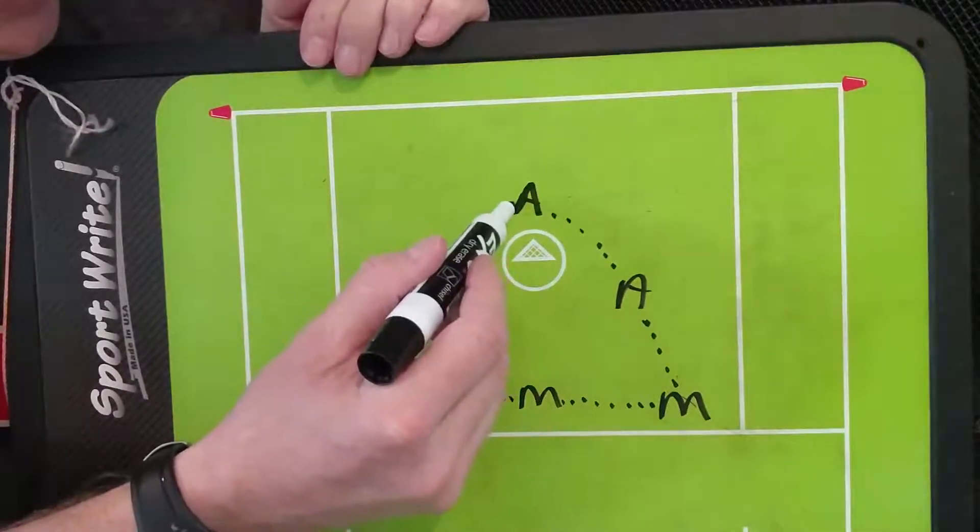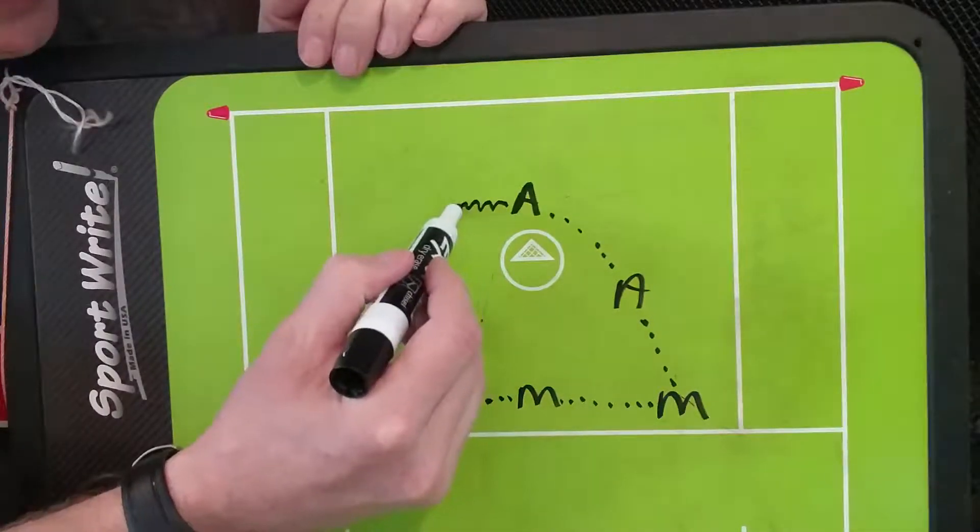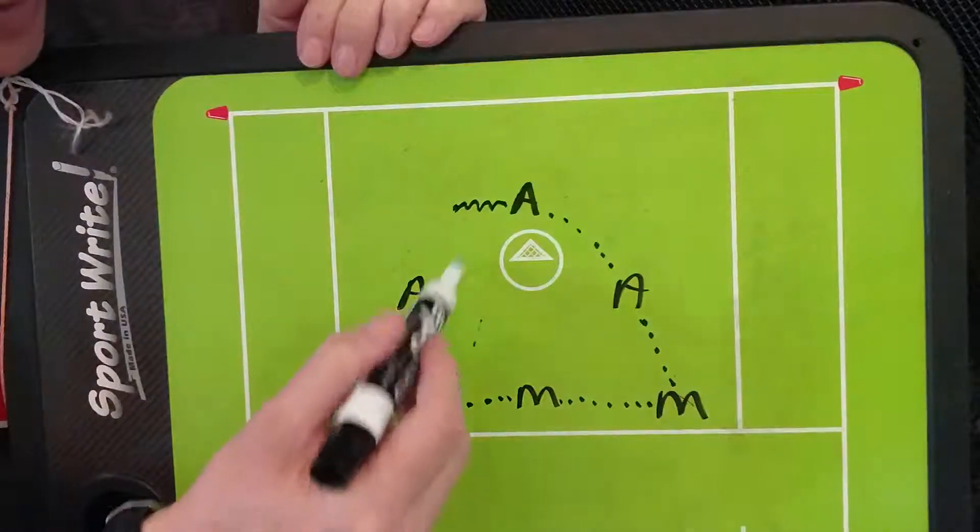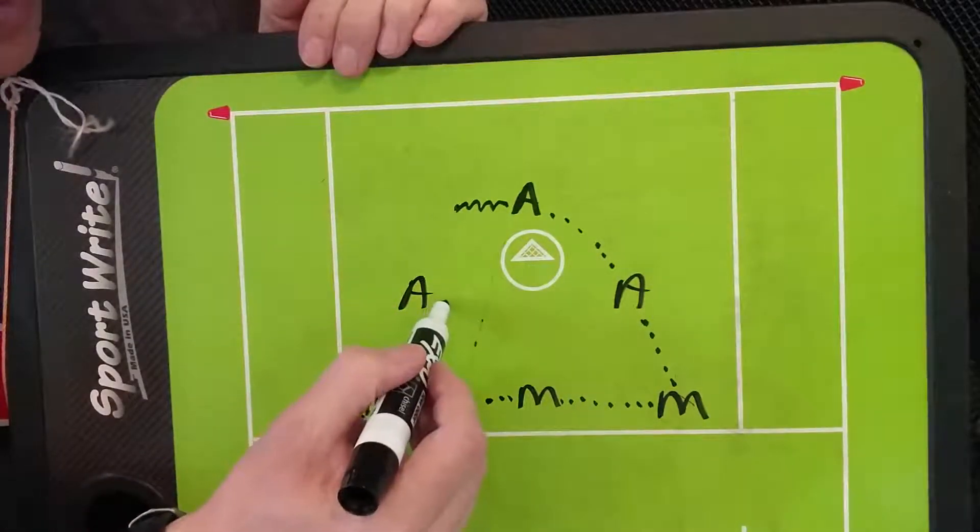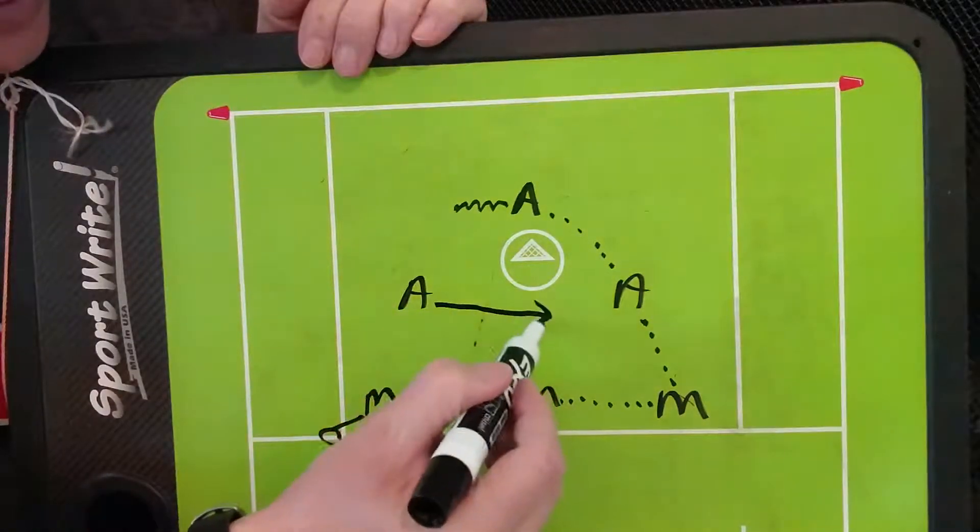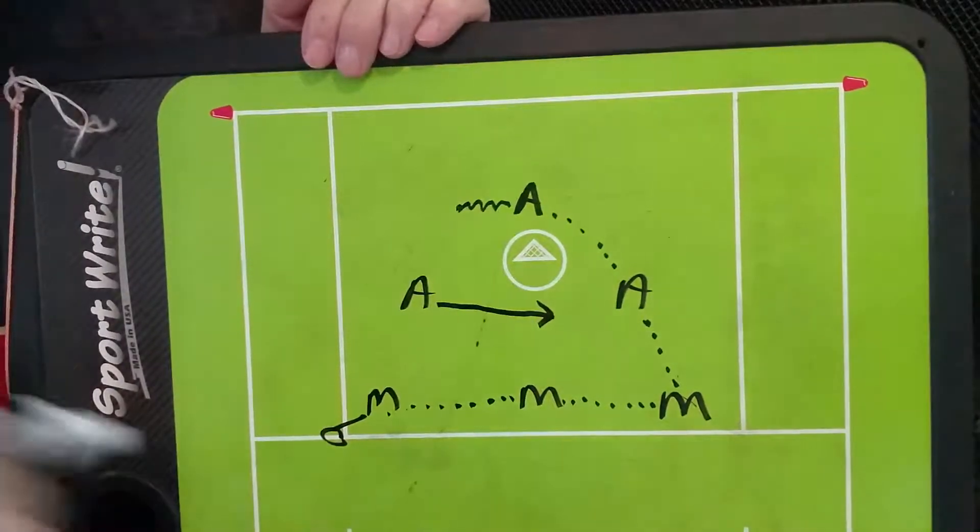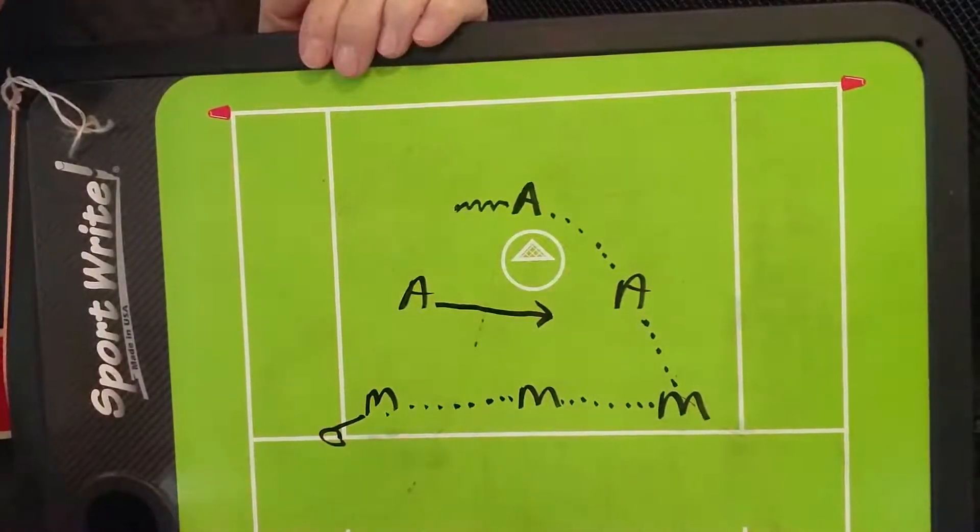When this pass is made here, this attackman's going to float out over here. When that happens, this attackman is going to cut to the top of the crease, and he's going to be screaming for the ball here, here, here.